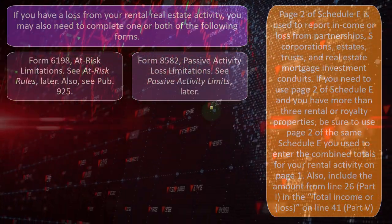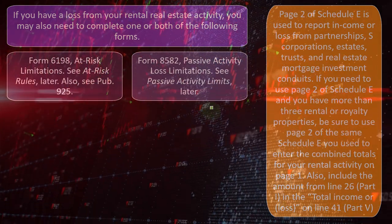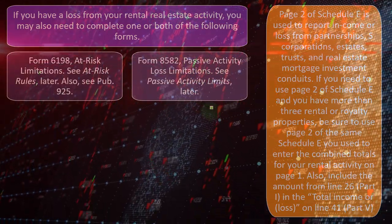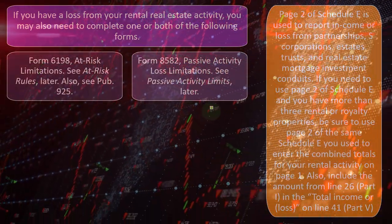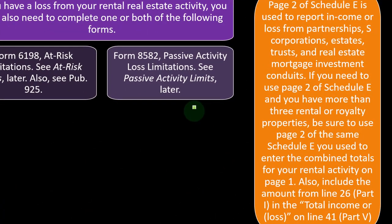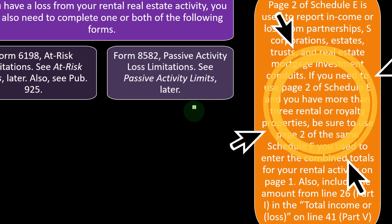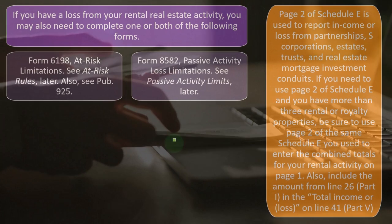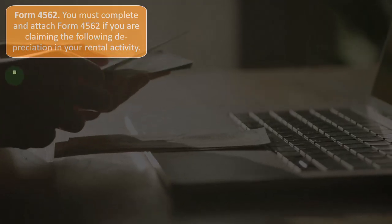Page 2 of Schedule E is used to report income or loss from partnerships, S-corporations, estates, trusts, and real estate mortgage investment conduits. If you need to use page 2 of Schedule E and you have more than three rental or royalty properties, use page 2 of the same Schedule E you used to enter the combined totals for your rental activity on page 1. Also include the amount from line 26, Part 1, in the total income or loss on line 41, Part 5.